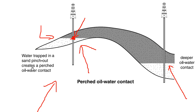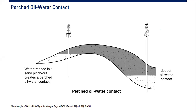Water trapped in a sand pinch-out creates a perch oil-water contact. Looking at a bigger picture with two wells: one well has the deeper, established oil-water contact based on existing wells. When we drill a new well, it finds an oil-water contact that is significantly shallower than the previously known OWC.